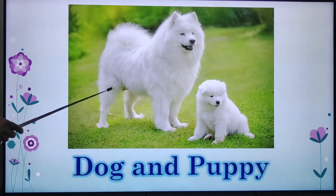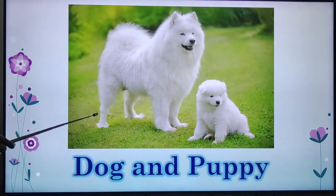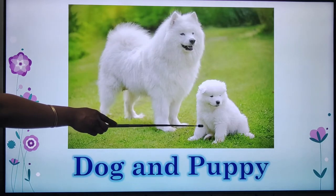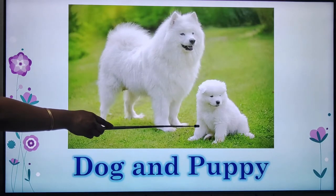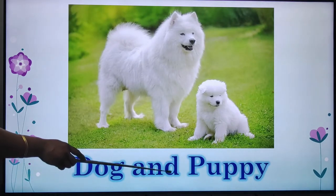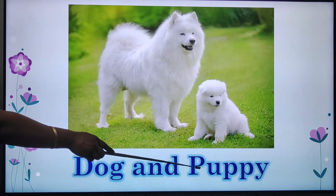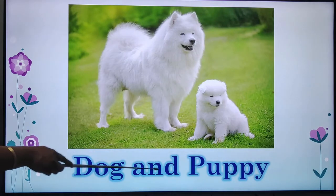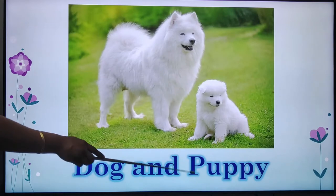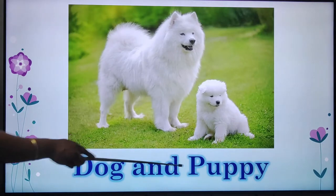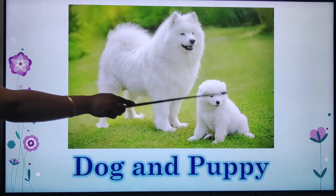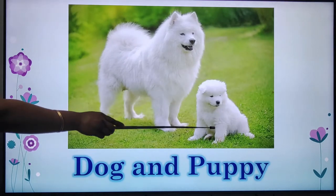This is dog. This is a puppy. Now let's see the young one of dog. D-O-G, dog. And P-U-P-P-Y, puppy. Dog and puppy. The young one of dog is called puppy.